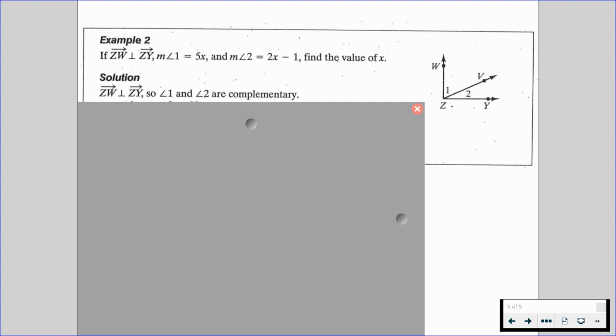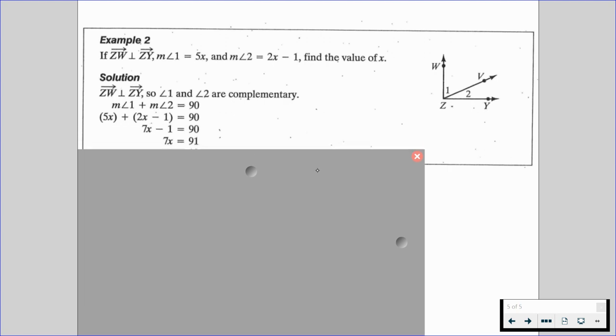We know that when two angles are complementary, the measures of those two angles are equal to 90 degrees. So the measure of angle 1 plus the measure of angle 2 equals 90 degrees. Now we can substitute in our given values and solve using algebra, and we're going to find that X is equal to 13.